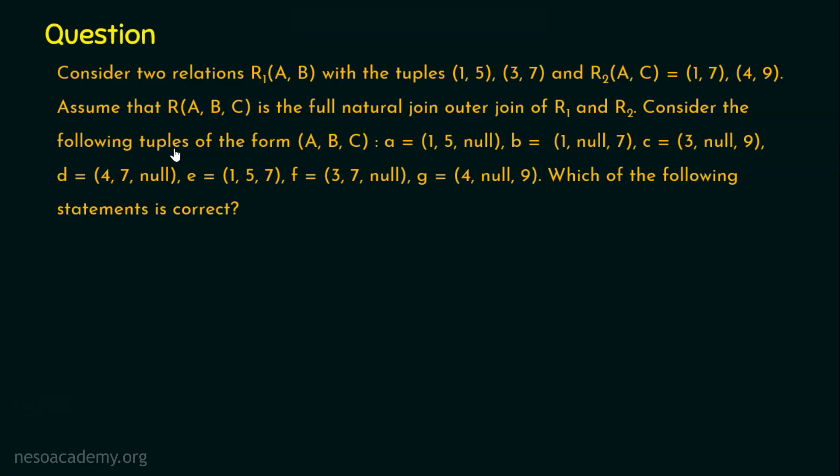Consider the following tuples of the form (A, B, C): tuple a = (1, 5, null), tuple b = (1, null, 7), tuple c = (3, null, 9), tuple d = (4, 7, null), tuple e = (1, 5, 7), tuple f = (3, 7, null), and tuple g = (4, null, 9). Now the question is, which of the following statements is correct?